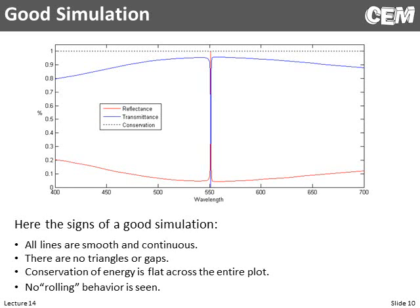This is a good simulation. Notice all the signs of a good simulation: all of the curves are smooth and continuous, which tells us we're not missing any information. Both transmitted and reflected lines are smooth. I always check for conservation of energy — if I add reflectance and transmittance, conservation is satisfied to nearly 100% all the way across. In the response I don't see any weird rolling behavior, which I'll show you in a few slides is a sign things are going wrong.